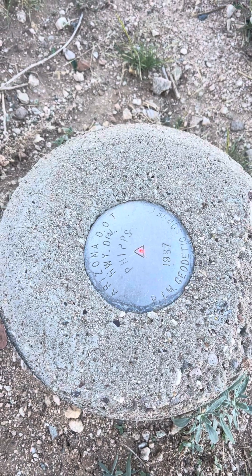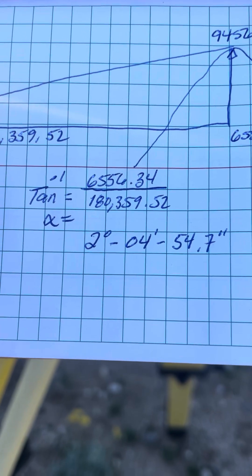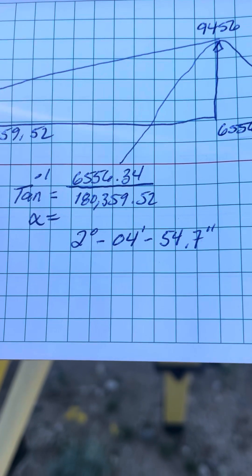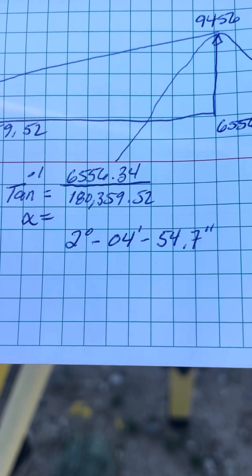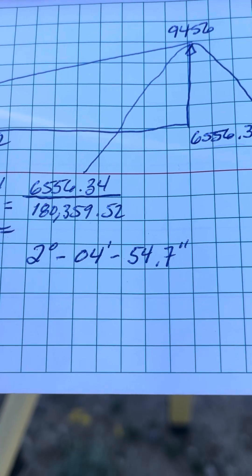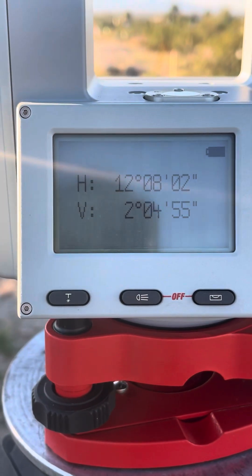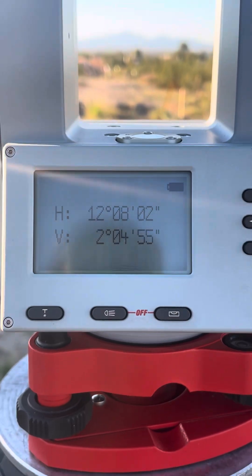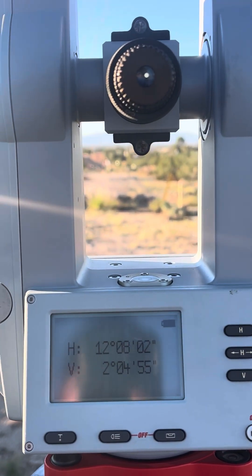So let's take a look and see if the earth is flat. Basic geometry and trigonometry must dictate that this angle would be a flat earth angle. We've got 2 degrees 4 minutes and 54.7 arc seconds. I'm going to round that up to 55. I've got 2 degrees 4 minutes and 55 arc seconds. Let's take a look at the scope and see if that crosshair is bisecting the peak of Mount Wrightson.